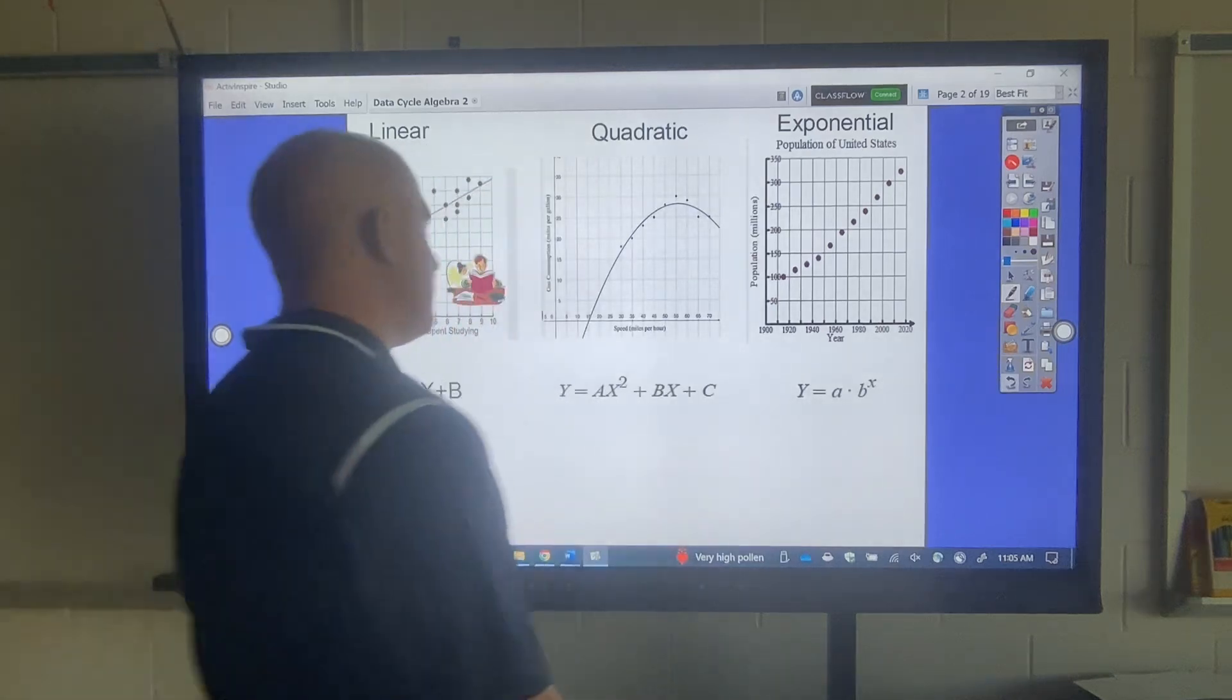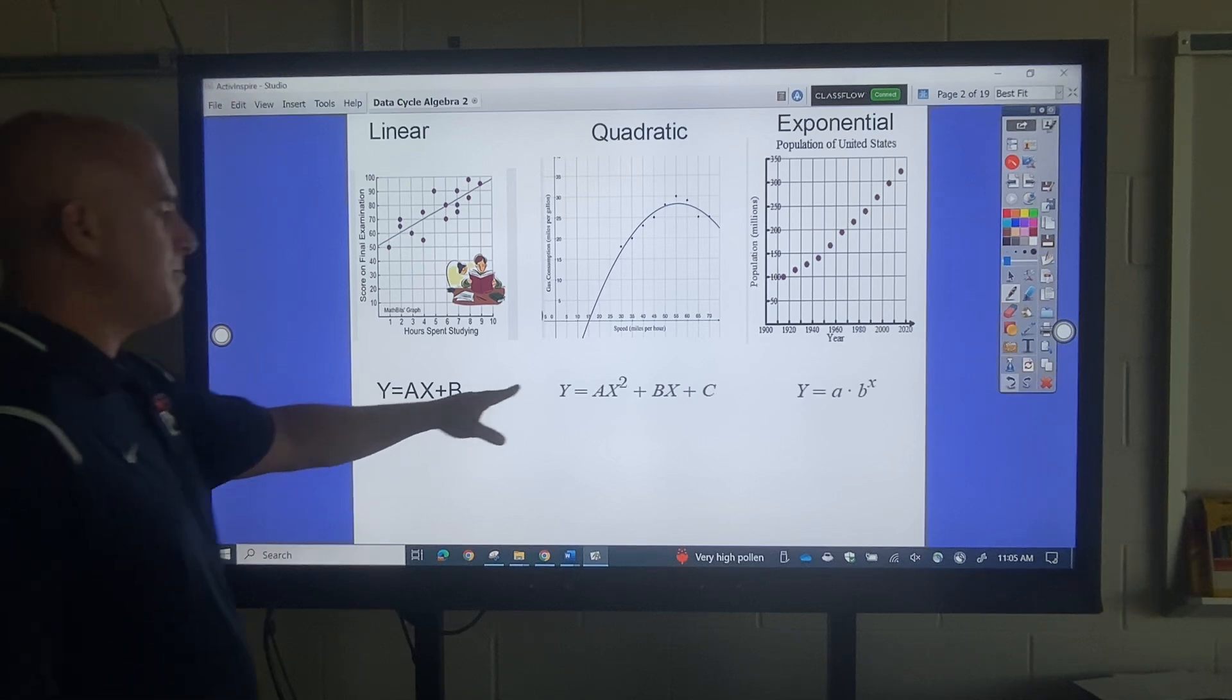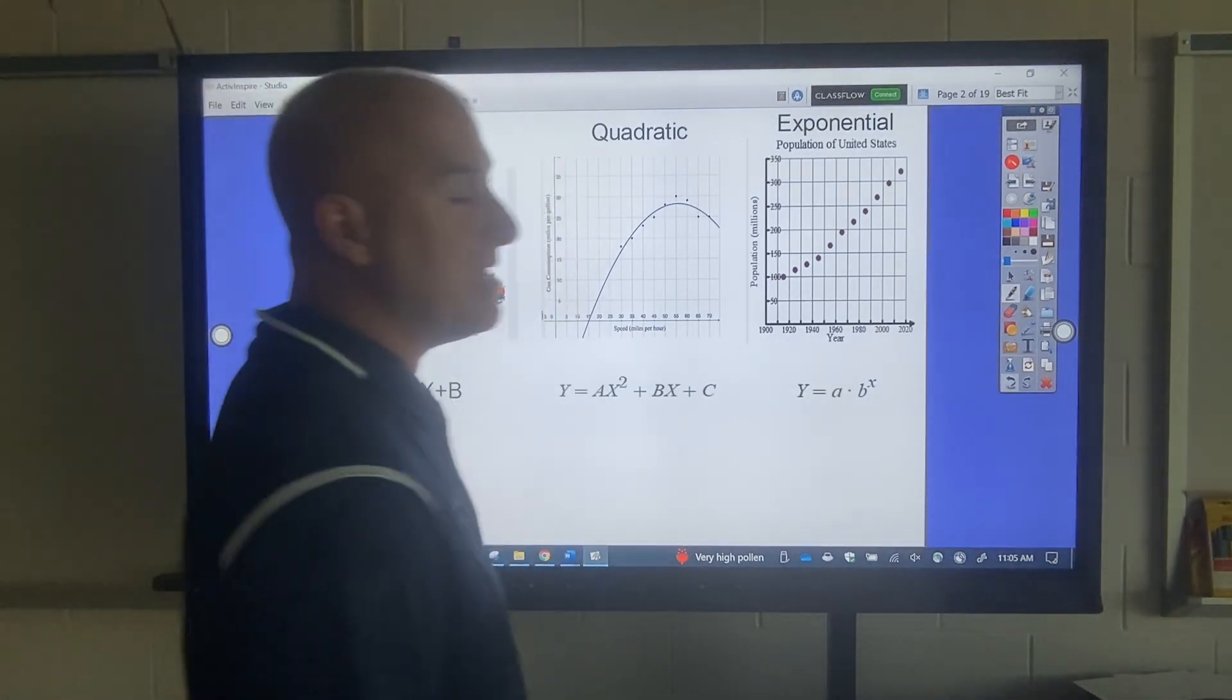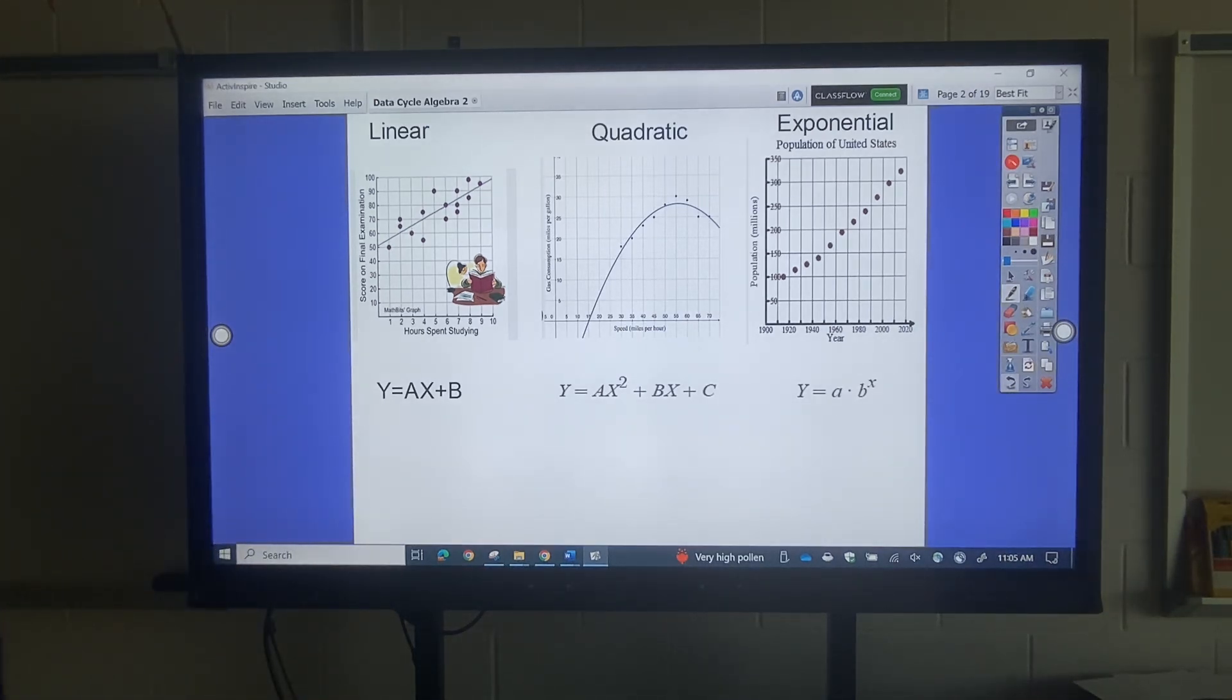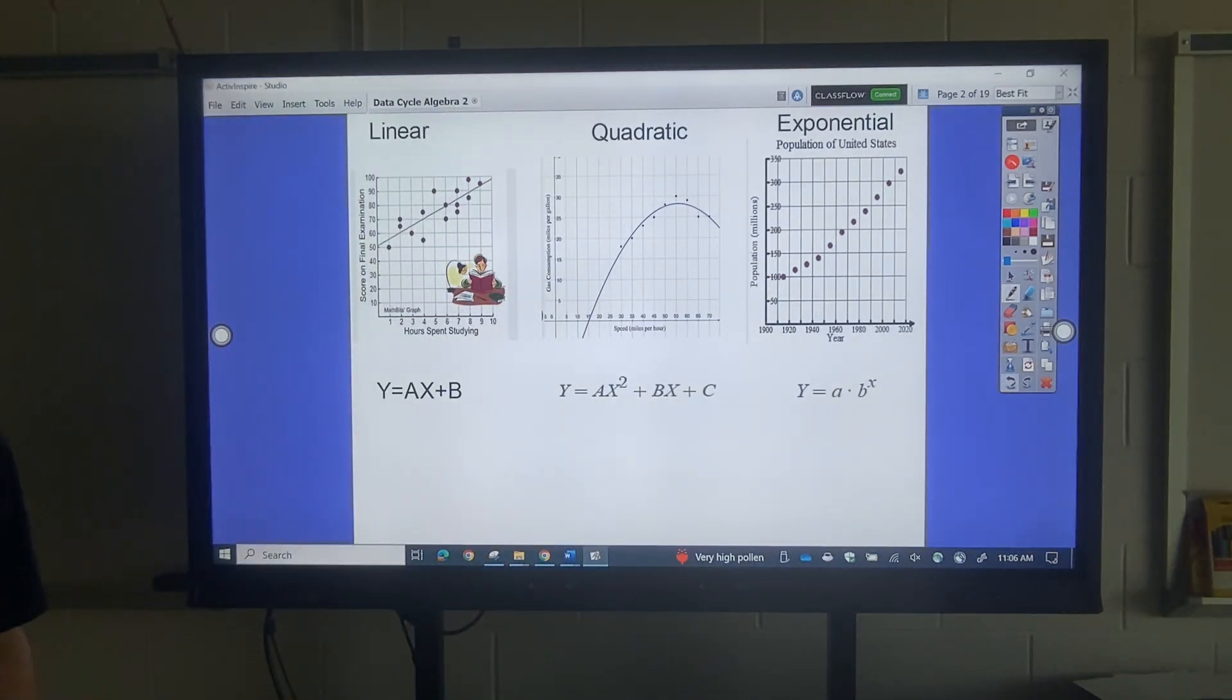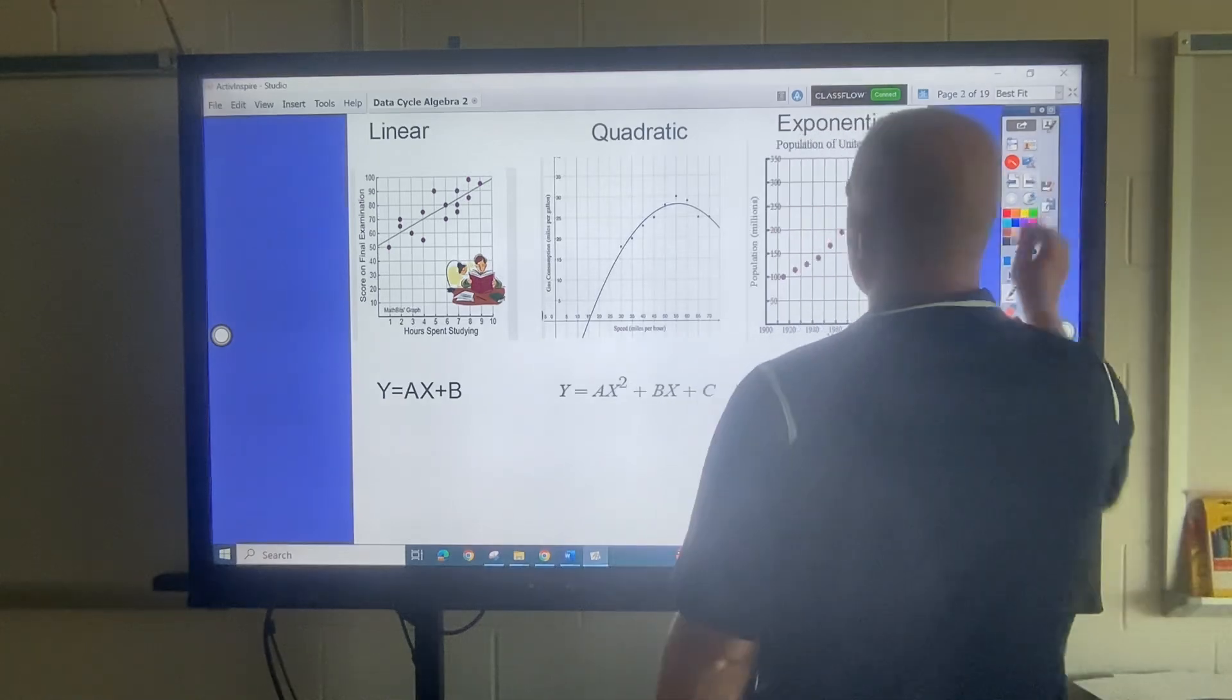Now, these all can be represented by equations. y equals ax plus b, y equals ax squared plus bx plus c, y equals a times b to the x. Now, in this first unit, we don't need you to memorize those. We're going to give you those. But each of these represents a different equation. As you can see, they're set up differently.